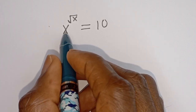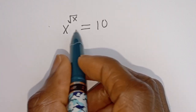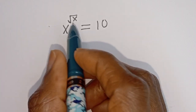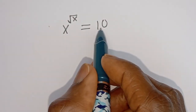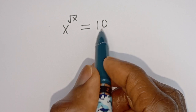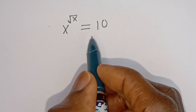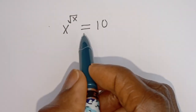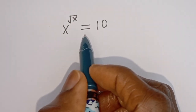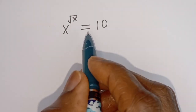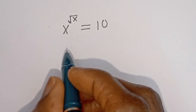Hello. How to solve for S in this equation: S to the power of square root of S is equal to 10. But before we proceed, please don't forget to like, share, comment, and subscribe.